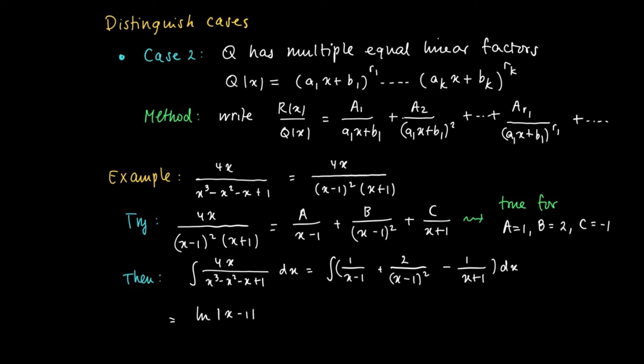So the primitive of 1/(x - 1) is the ln of the absolute value of (x - 1).